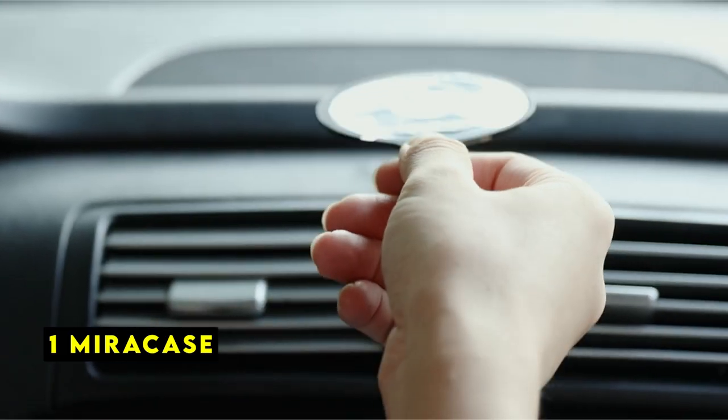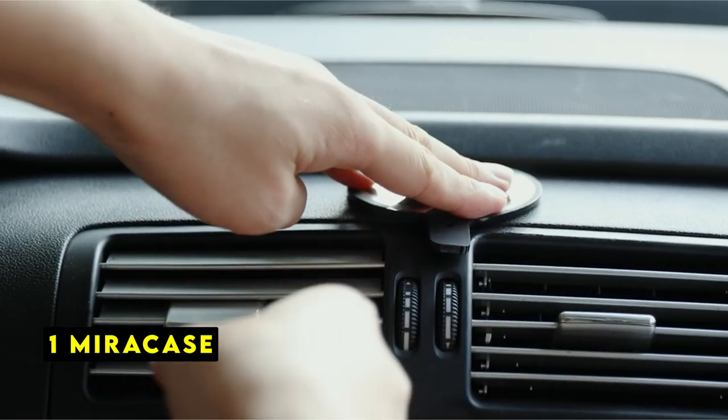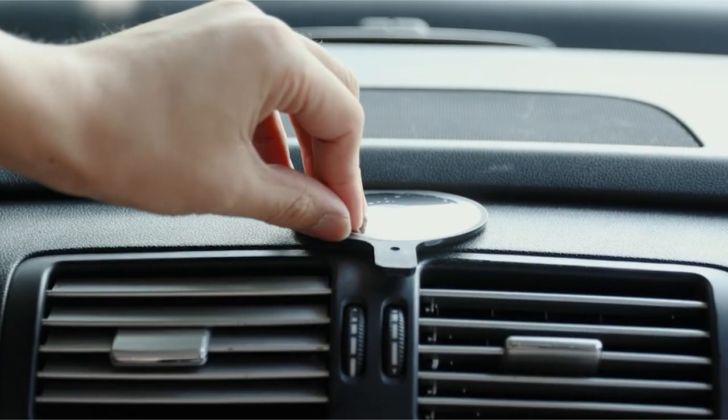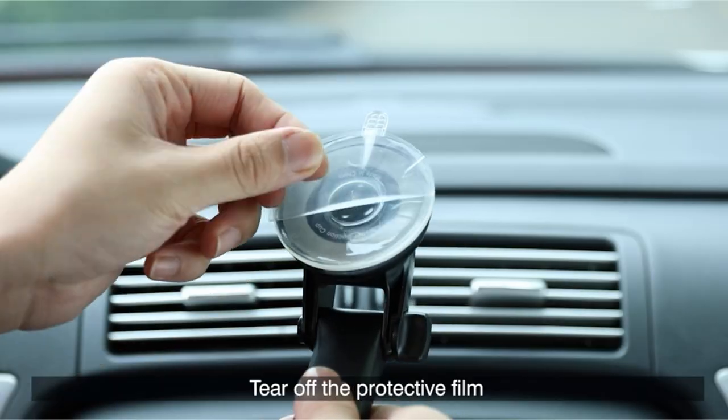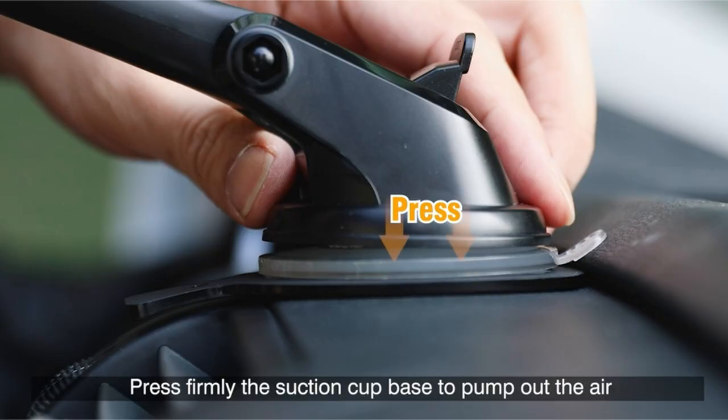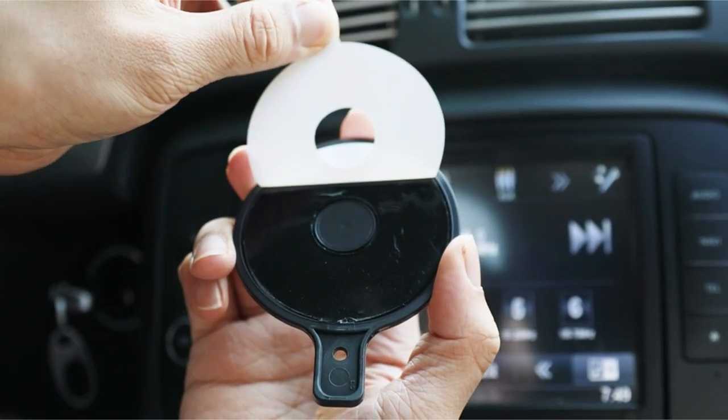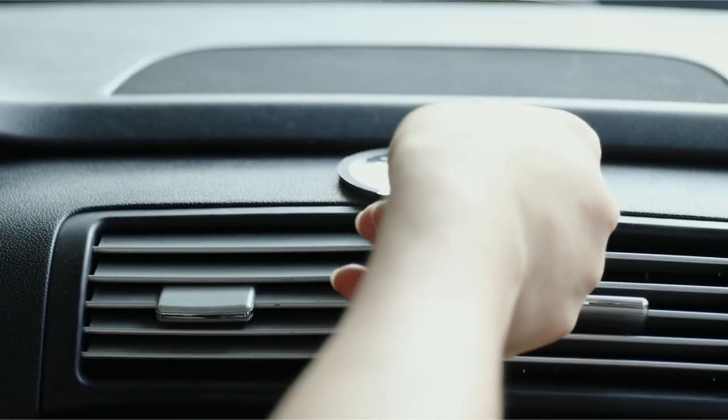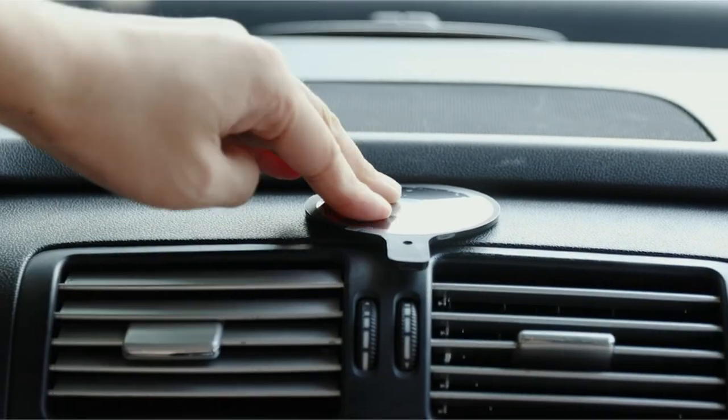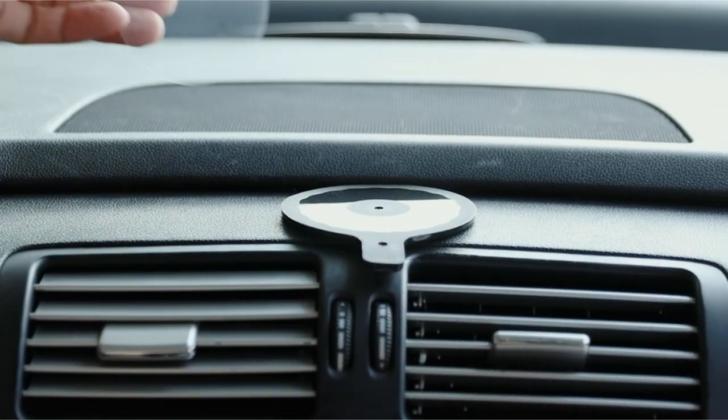Now moving to the last one is MiraCase. The MiraCase multifunctional car phone holder prioritizes stability and versatility, making it a compelling choice for drivers of all kinds. Its upgraded suction cup and second-generation vent clip provide a firm grip on your phone, whether you prefer dashboard, windshield, or air vent mounting. This secure hold extends beyond bumpy roads, making it ideal for even the most demanding journeys.